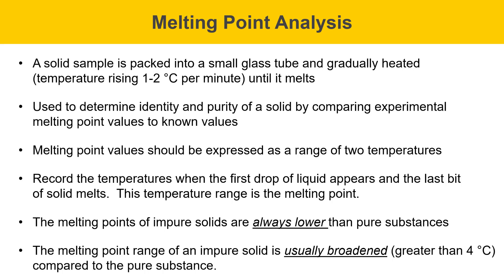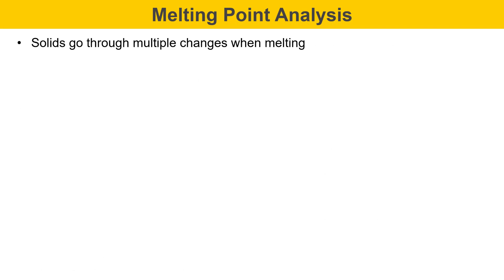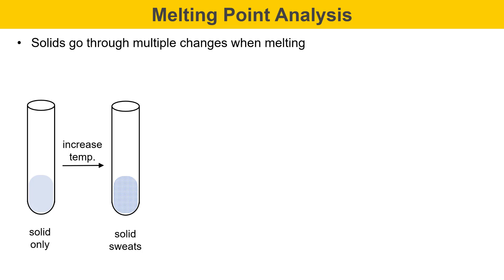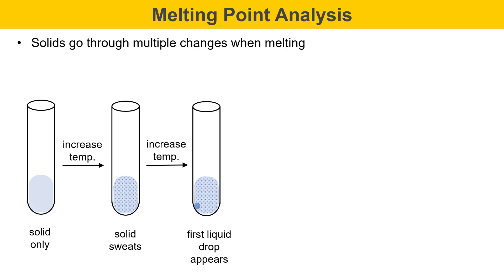If the range is greater than about 4 degrees Celsius, it's considered broadened and impure, and with impure solids, sometimes the range can be very broad. When solids melt, they go through multiple changes. At first, there'll be solid only in the melting point capillary tube. Then, as the temperature is increased, it may seem to sweat. Sometimes they also shrink or move a little bit. This isn't considered melting — this is just one of the changes that the solid undergoes as it gets hot. As you increase the temperature, eventually you see the first drop of liquid.